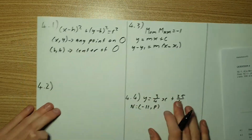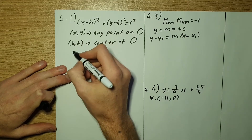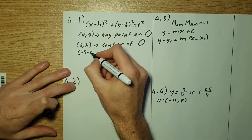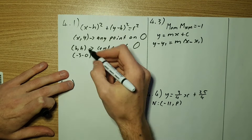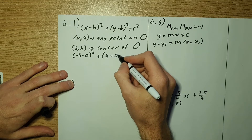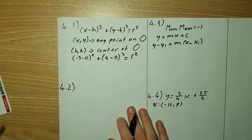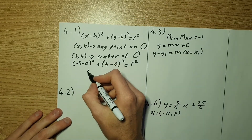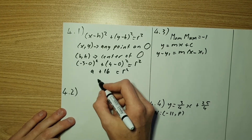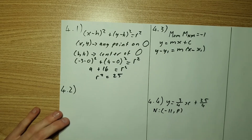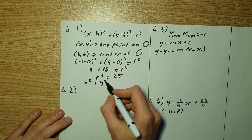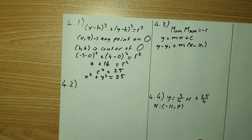We're solving for r. So we have x equal to negative 3 minus 0 — since h is the center — all squared, plus y equal to 4 minus 0 squared, equals r squared. Solving out: 9 plus 16 equals r squared, so r squared equals 25. Don't forget to rewrite the equation: x squared plus y squared equals 25. That's the equation.